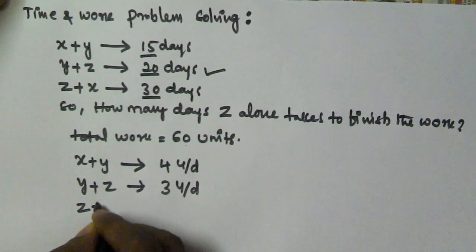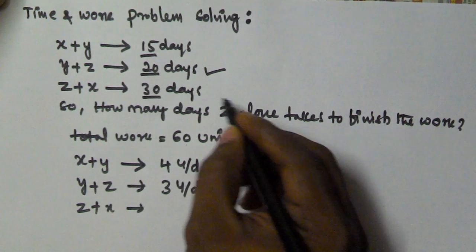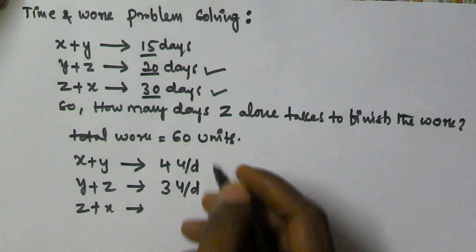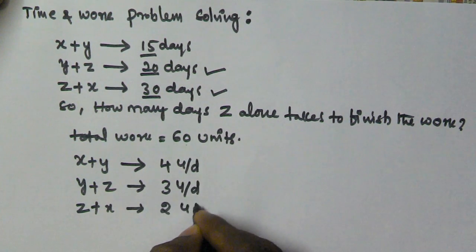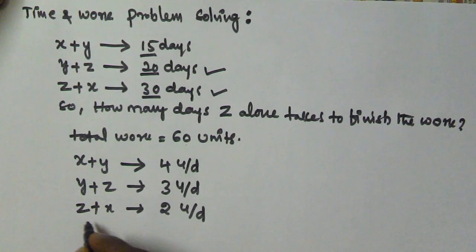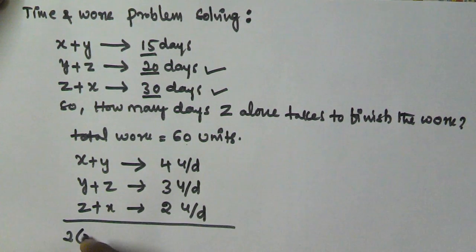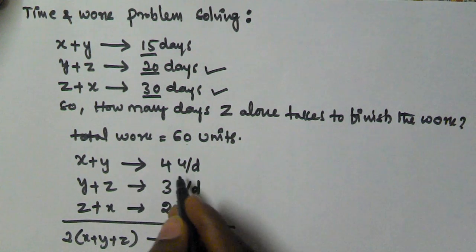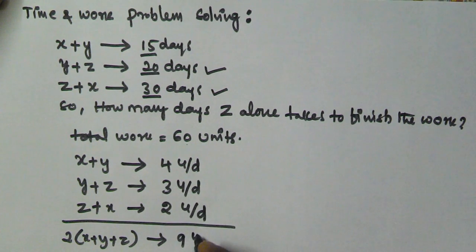Z and X together take 30 days to finish the work. The total work is 60 units, that means they are going to finish 2 units per day. So if we add all of them we get 2 times (X + Y + Z), that is going to be 4 plus 3 is 7, and 7 plus 2 is 9 units per day.